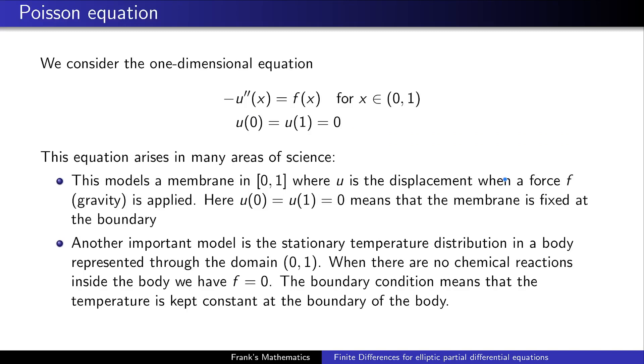Today we are dealing with the very famous Poisson equation which is an elliptic partial differential equation. We want the negative second derivative of a function u to be equal to a function f inside an interval from zero to one. On the boundary of this interval, which consists of the two points zero and one, we force the function to take a specific value, in this case zero. This is called the Poisson equation with Dirichlet boundary conditions. This equation is very famous because it models a lot and can be used in various areas.